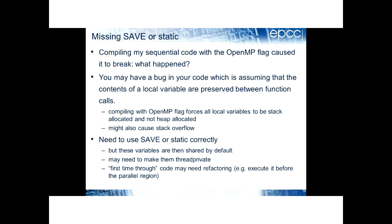Something I've seen quite a few times: you have a sequential code, you compile it with the OpenMP flag, the code contains no OpenMP directives or runtime calls — it's plain sequential code — you compile it with the OpenMP flag, and it breaks. What happened? You might have a bug in your code that assumes the contents of a local variable are preserved between function calls. Compiling with the OpenMP flag forces all local variables to be stack-allocated rather than heap-allocated.